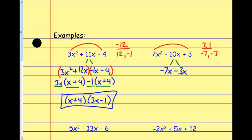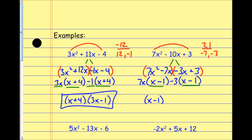I split up the middle term: negative 10x becomes negative 7x minus 3x, which is the same thing. Everything else tags along for the ride. Now I have four terms and I factor by grouping. Out of the first two terms I factor out 7x, leaving x minus 1. Out of the second two terms, I see that negative in front, so I factor out negative 3, leaving positive x minus 1. The common factor is x minus 1, and removing it leaves 7x minus 3 as the other factor.